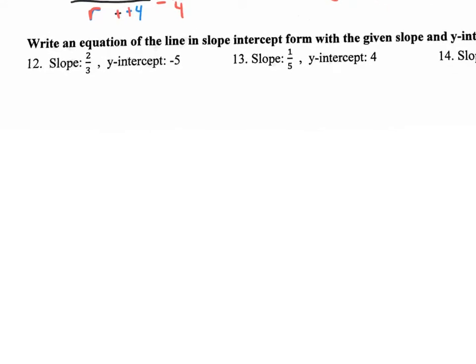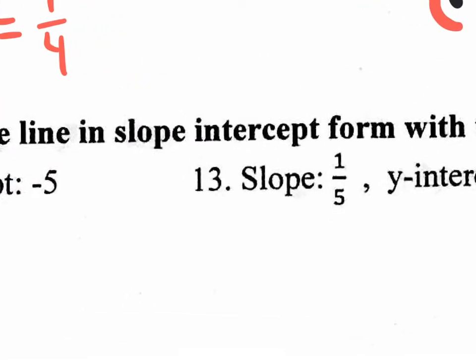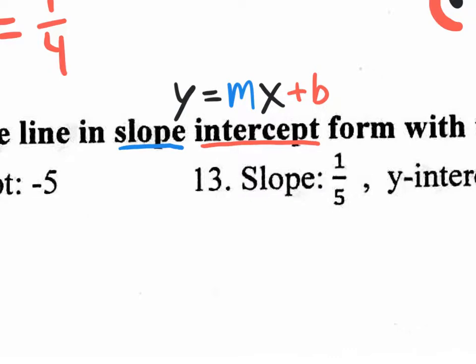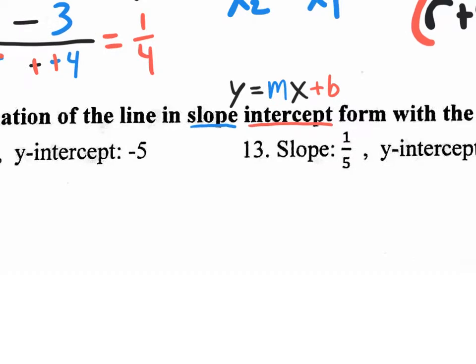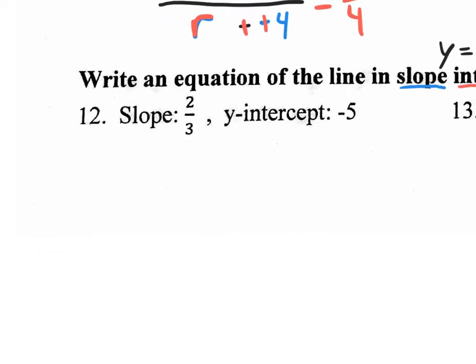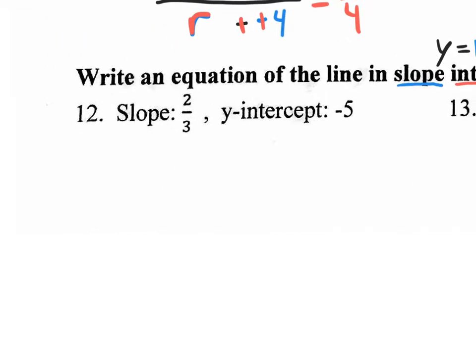Now there are a couple of these questions: write an equation of the line in slope-intercept form. Slope-intercept form is y equals mx plus b. Why do we call it slope-intercept form? Because if it's in slope-intercept form, you can see the slope — the m — and you can see the y-intercept — the b. So slope-intercept form is y equals mx plus b. You need two things to write it: the slope and the intercept — the m and the b.